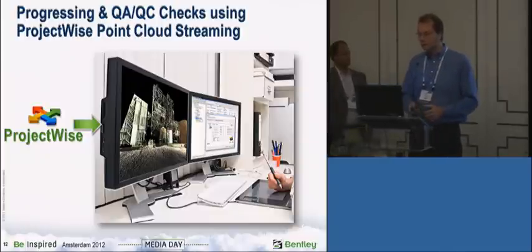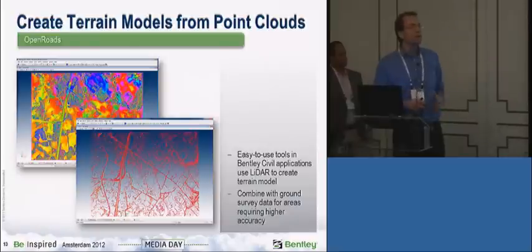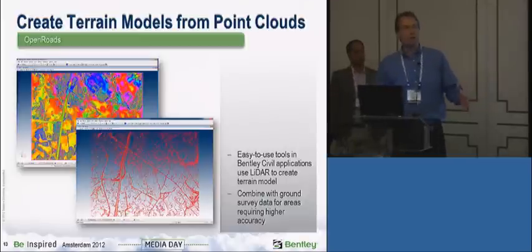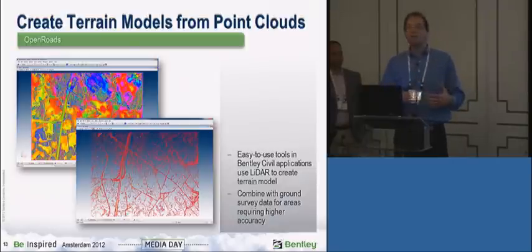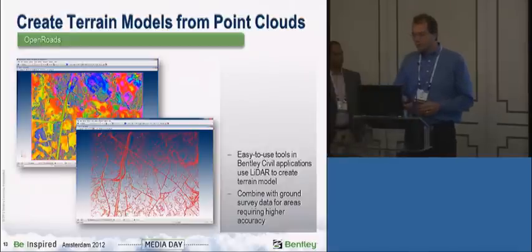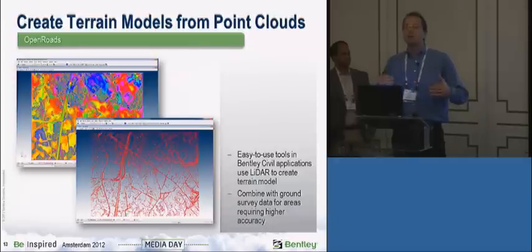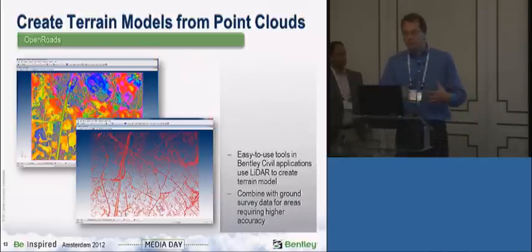Rather than transmitting the whole point cloud and waiting for a four-gigabyte download, you reference the point cloud, the data starts to stream in, and the user can get right to work. When we scan the site with lidar — say aerial lidar — we're picking up not only the surface of the earth, but also vegetation, buildings, roads, and bridges. To create a bare earth model, we have tools that filter the point cloud to only points classified as ground, then use those to create your terrain model. You can also combine that with traditional survey information for higher accuracy in specific areas — it's not an all-or-nothing approach.